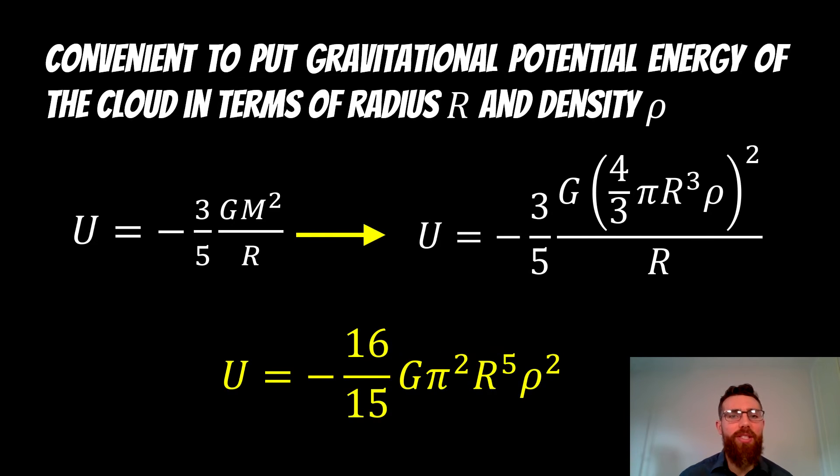We also want to do the same thing for the gravitational potential energy as well. We want to put it in terms of radius and density and take that mass out. We can rewrite that in terms of radius and density because we know how mass, radius and density all relate to one another. It's a sphere. We just exchange the mass for the radius and density there, and we get this expression at the bottom. Now we've got these two new equations, we can put them back into our theorem.